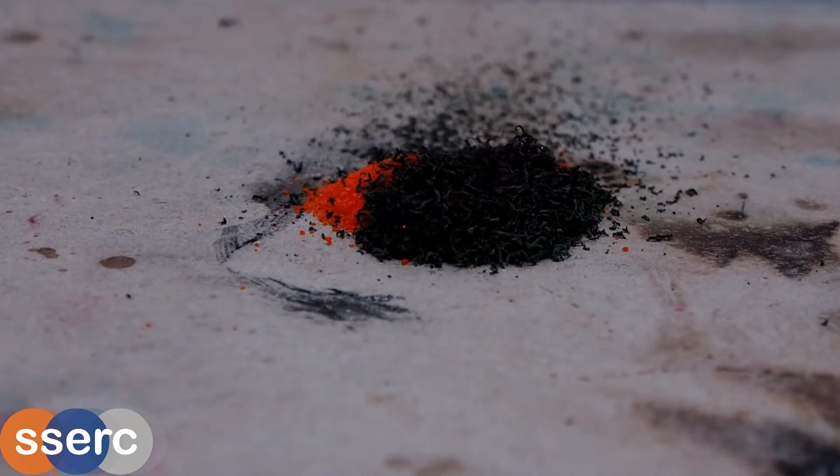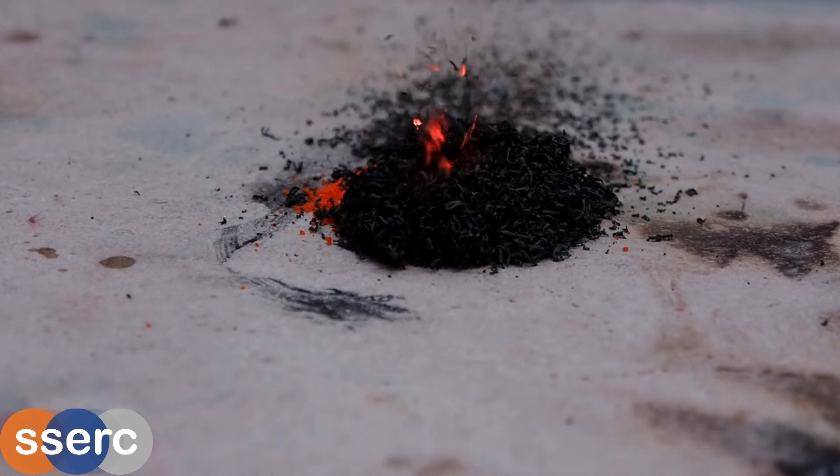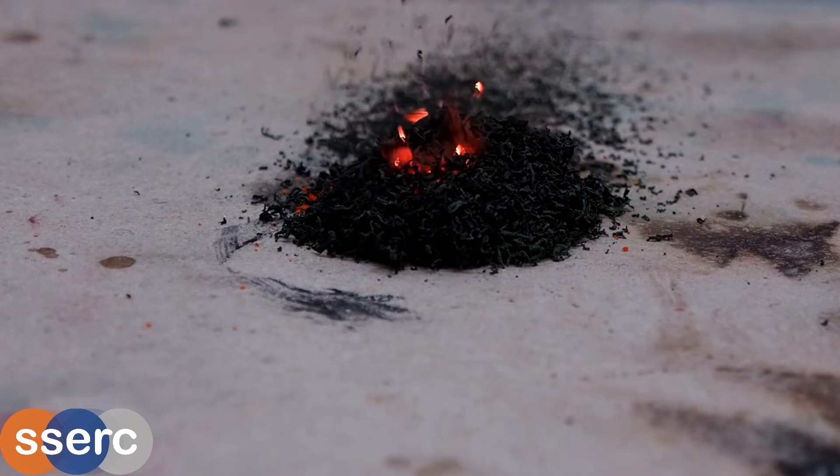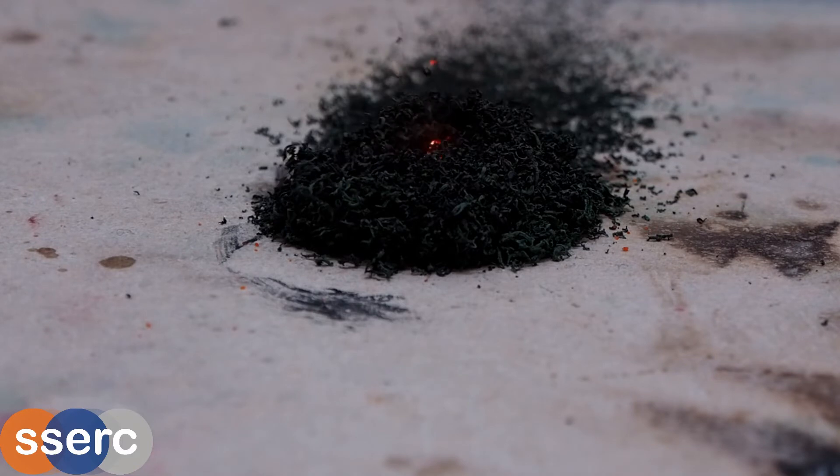You put a small pile of ammonium dichromate onto a heatproof mat in a fume cupboard and set light to it. Once lit it behaves like a miniature volcano producing orange sparks and a pile of dark green solid, chromium oxide.